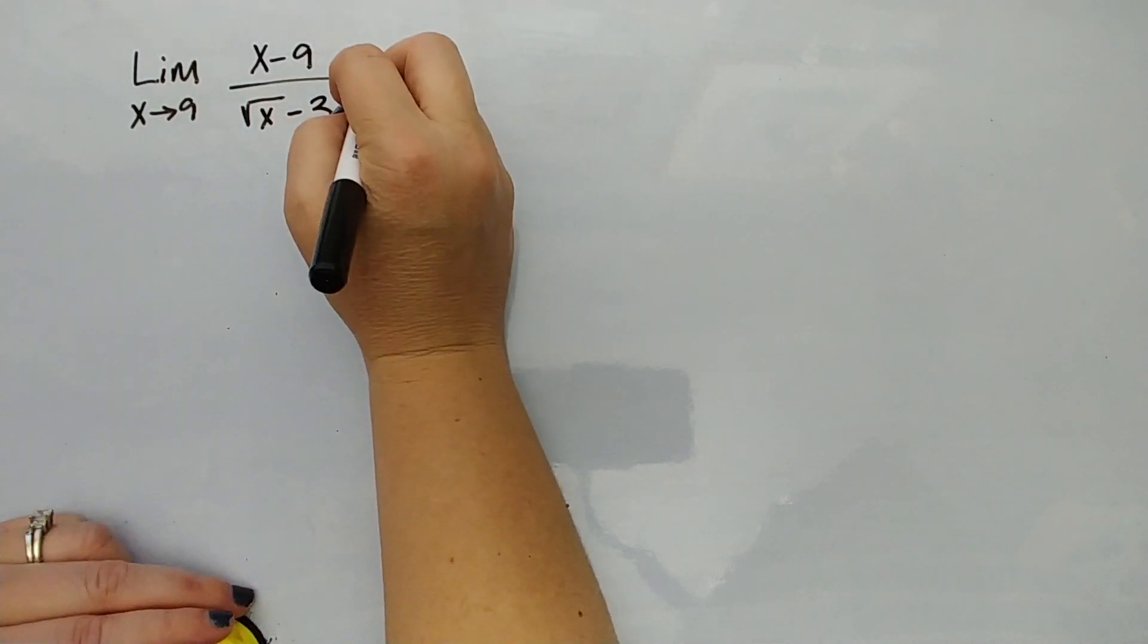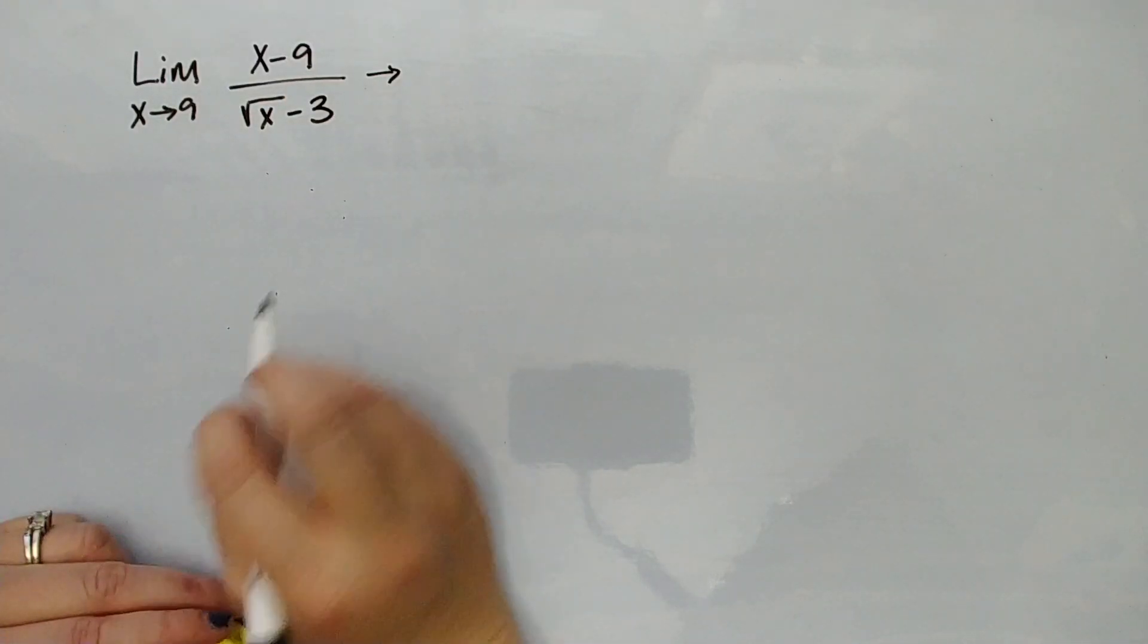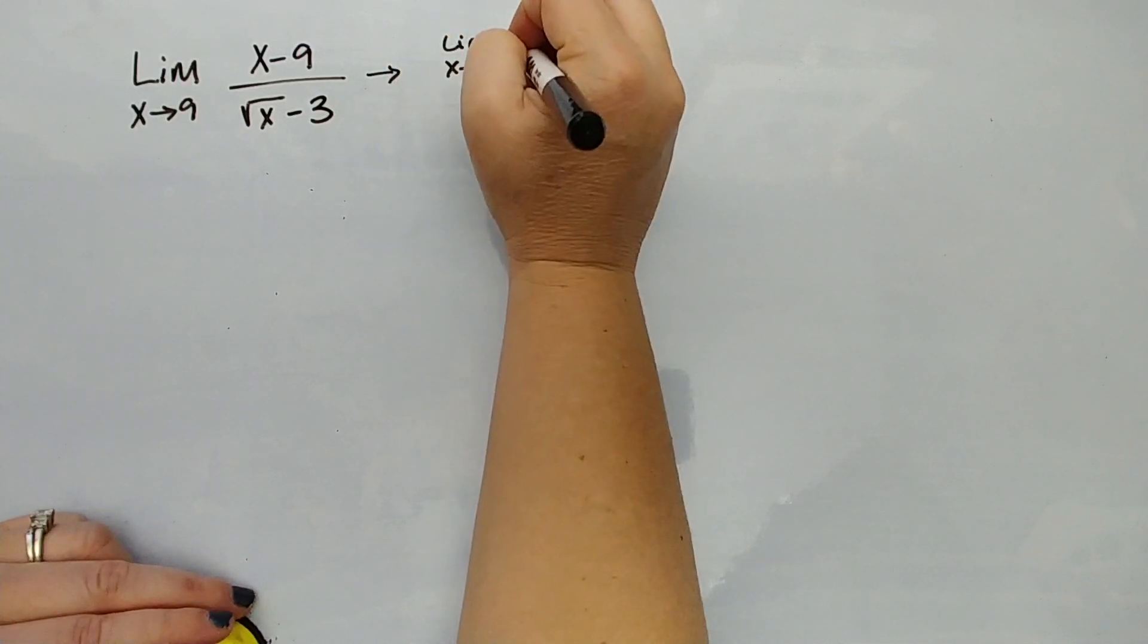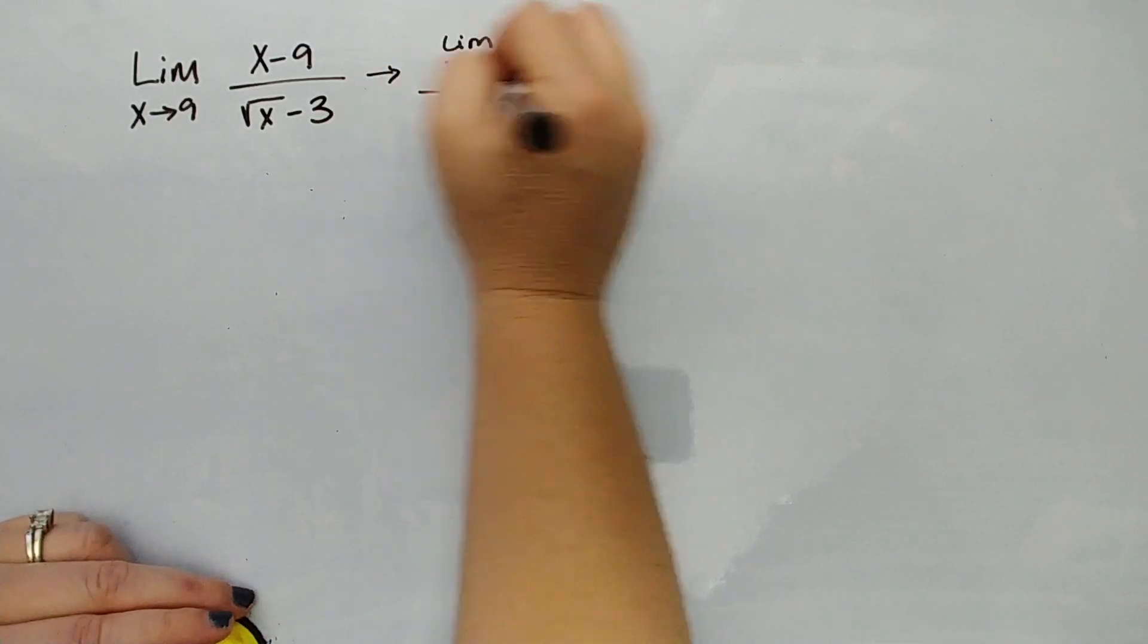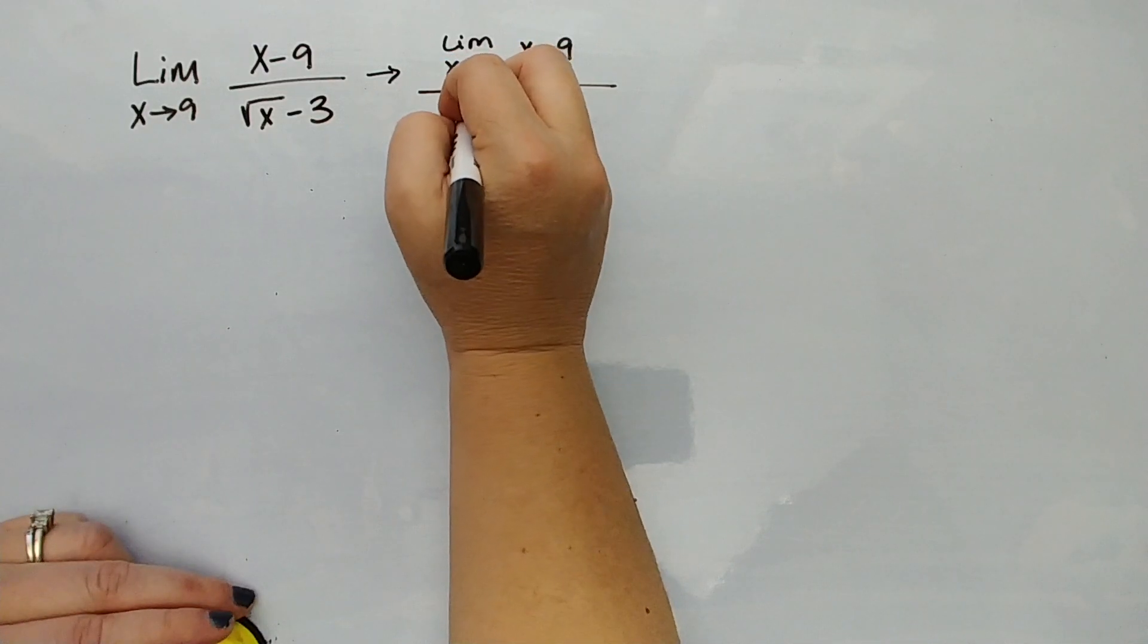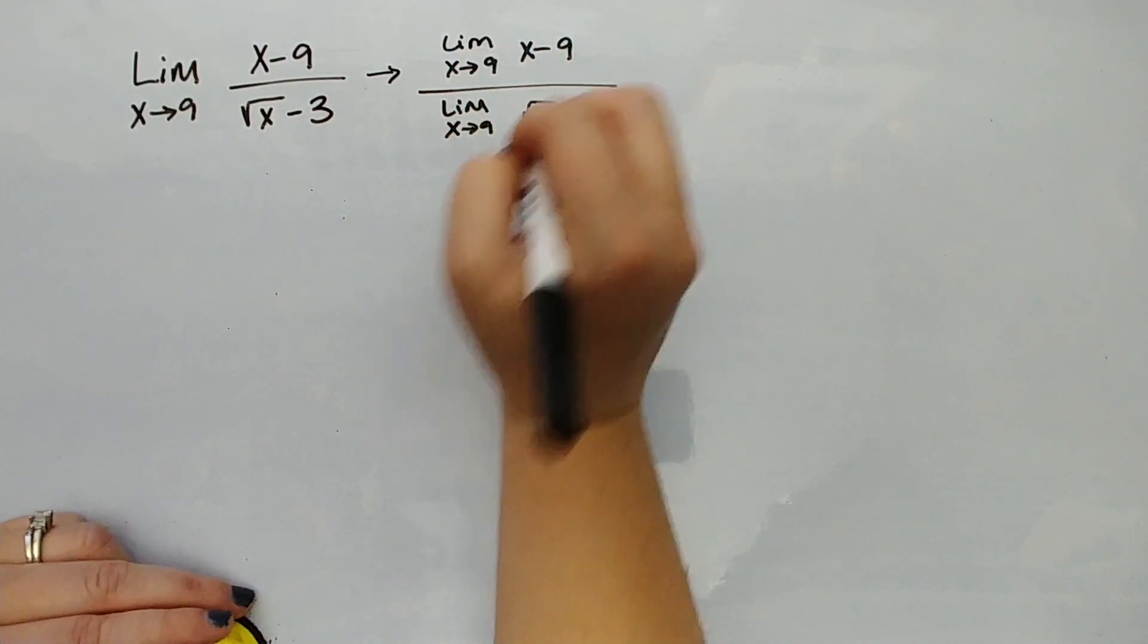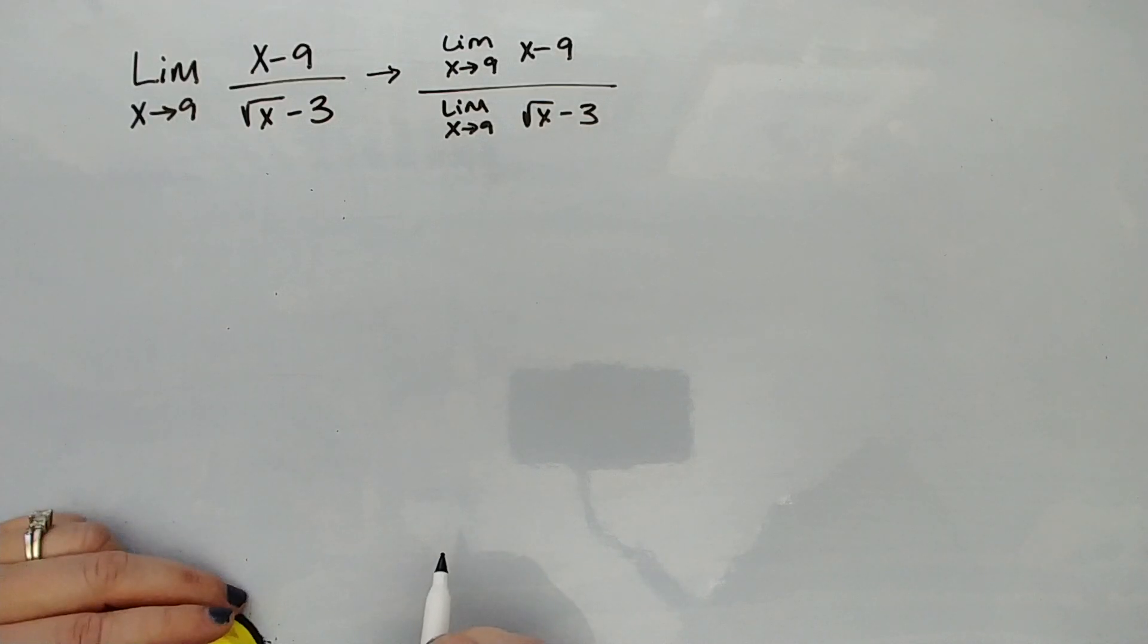So let's go ahead and rewrite this as what it actually means using our limit properties. This is the limit as x approaches 9 for x-9 over the limit as x approaches 9 for the square root of x minus 3, using our quotient property of limits.